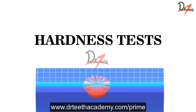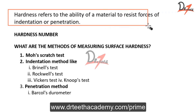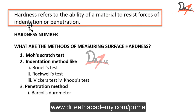The first question is: what is hardness? Hardness refers to the ability of a material to resist forces of indentation or penetration. We depict the hardness of a material by the hardness number. If a material has a low hardness number, that means it is a soft material, and vice versa.